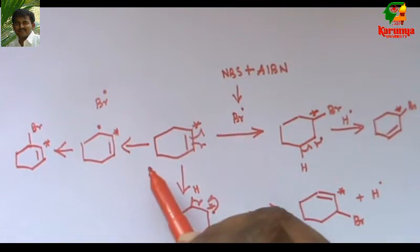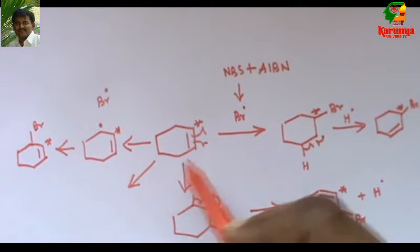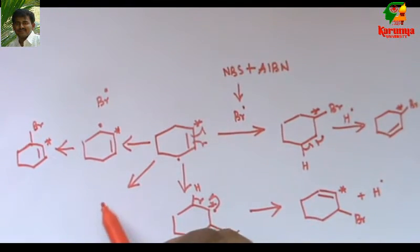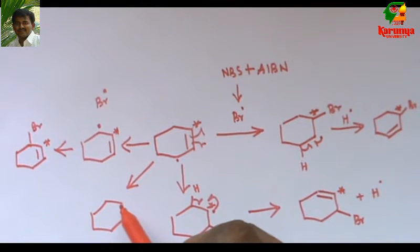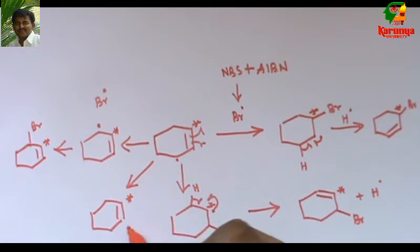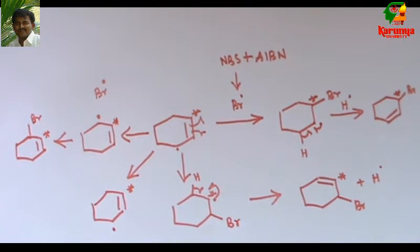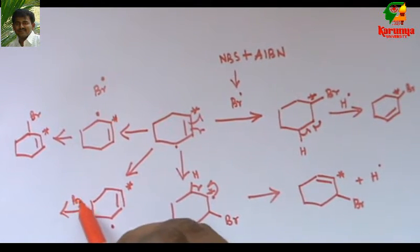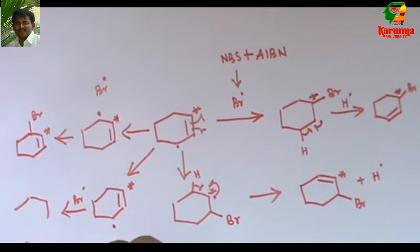There is one more allylic position. That is this carbon. So radical may be generated here also and it may combine with Br radical to give another product.